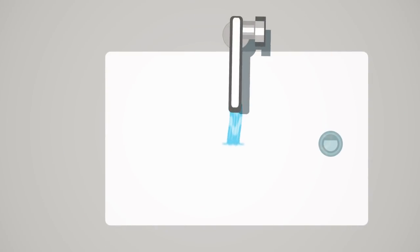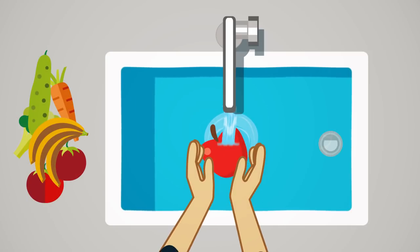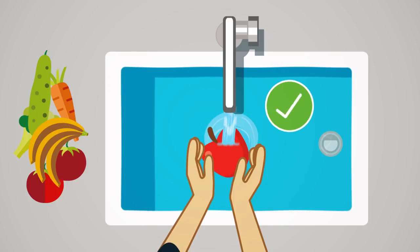Nonetheless, it is a good idea to wash fresh fruits and vegetables under clean running water to reduce any pesticide residues that may be present along with dirt and germs.